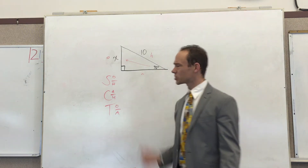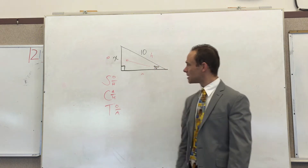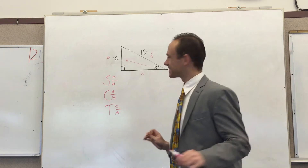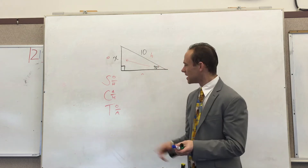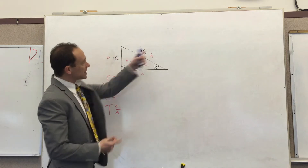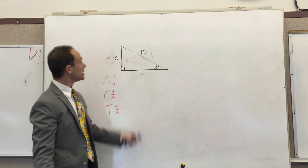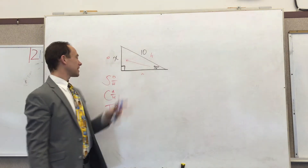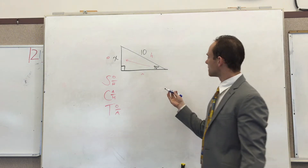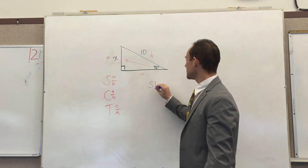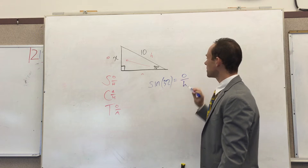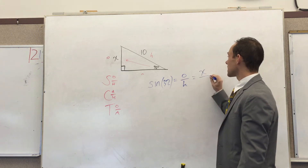So which trig function should we use — sine, cosine, or tangent? A lot of this is dictated by what we've got and what we need. We have the hypotenuse, so tangent is out because tangent doesn't involve the hypotenuse. It's going to be between sine and cosine. Since we want the opposite side and we're given the hypotenuse, sine steps up. So: sine of 32° equals the opposite over the hypotenuse, which is x over 10.